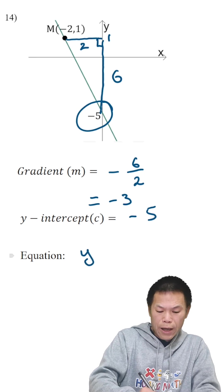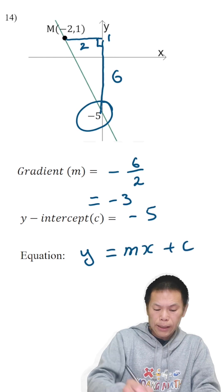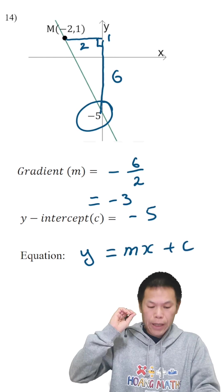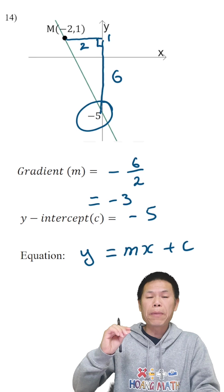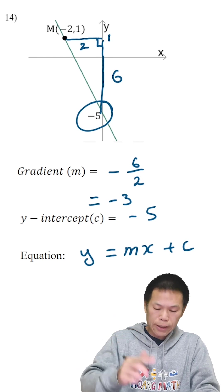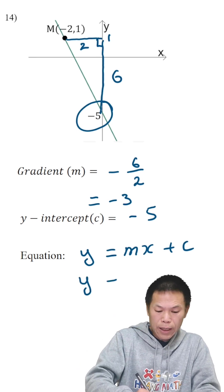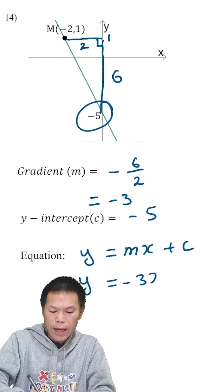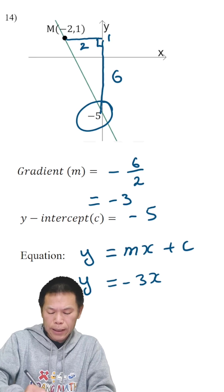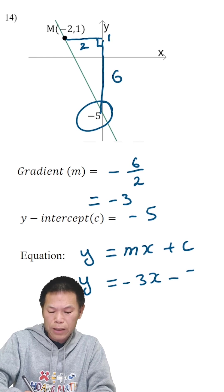The equation is y equals mx plus c. And m is negative three, so negative three times x is negative three x. So y is negative three x, and plus c. C is negative five, so which is minus five.